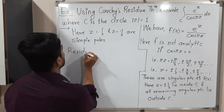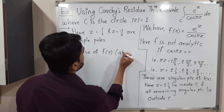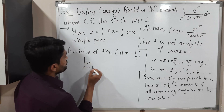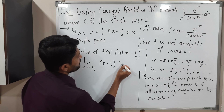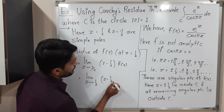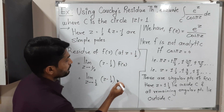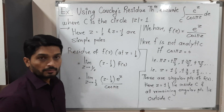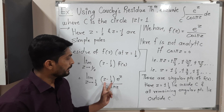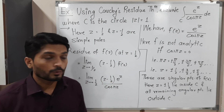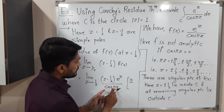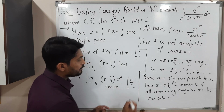Let us find the residue of f(z) at Z = 1/2. The formula says: limit as Z tends to 1/2 of (Z - 1/2) · f(z). Substituting f(z) = e^Z / cos(πZ), we cannot cancel anything directly. If we put Z = 1/2, the numerator gives (1/2 - 1/2) = 0 and cos(π/2) = 0, so we get a 0/0 indeterminate form.